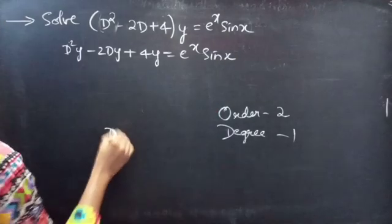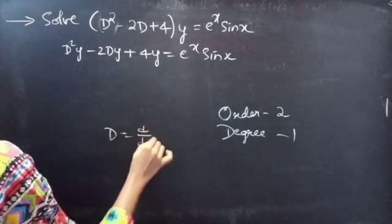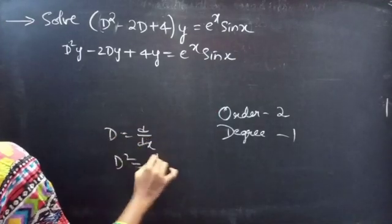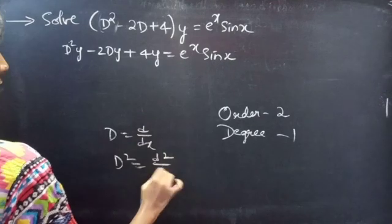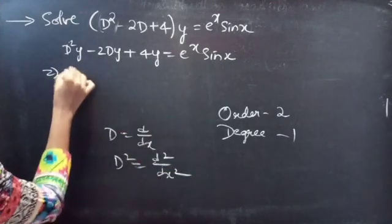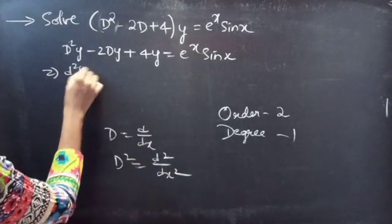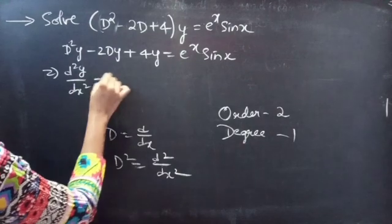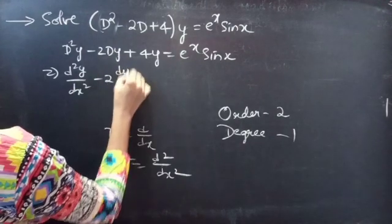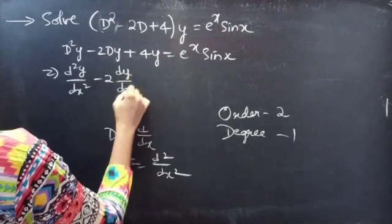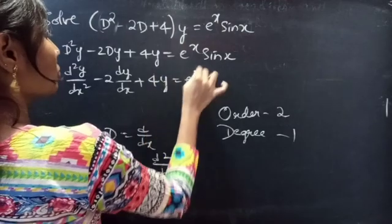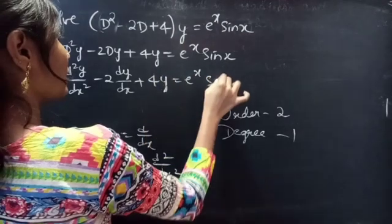We know that D is a differential operator. Then D squared will be d squared by dx squared. We can write D squared y as d²y/dx² minus 2 times dy/dx plus 4y equals e to the power x sine x.